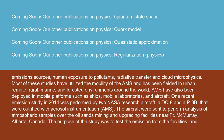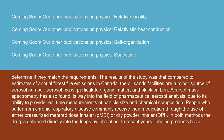One recent emission study in 2014 was performed by two NASA research aircraft, a DC-8 and AP-3B, outfitted with aerosol instrumentation including AMS. The aircraft were sent to perform analysis of atmospheric samples over the oil sands mining and upgrading facilities near Fort McMurray, Alberta, Canada. The purpose of the study was to test the emissions from the facilities and determine if they matched the requirements. The results showed that compared to estimates of annual forest fire emissions in Canada, the oil sands facilities are a minor source of aerosol number, aerosol mass, particulate organic matter, and black carbon.